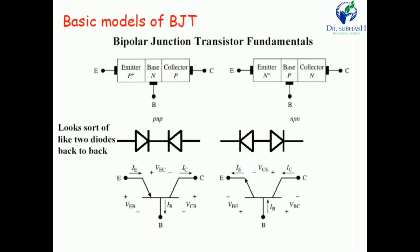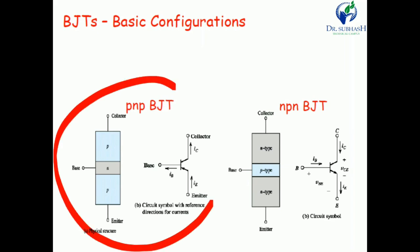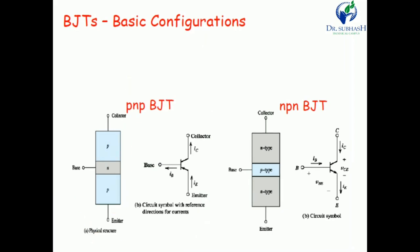Current and voltage differ at each terminal: emitter current is IE, collector current is IC, and base current is IB. Voltage between two leads indicates the voltage difference — emitter-base, emitter-collector, and base-collector. In the basic BJT configuration, for a PNP transistor the arrow is inside and for an NPN transistor the arrow is outside.